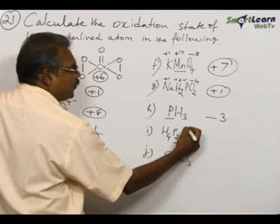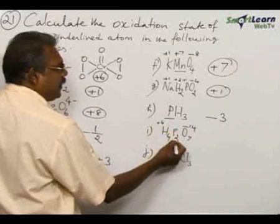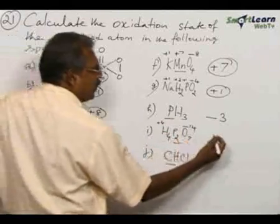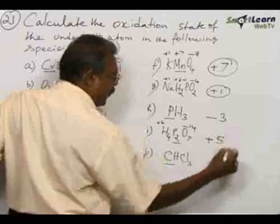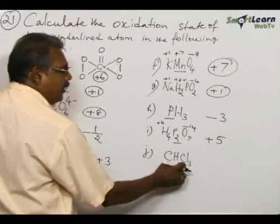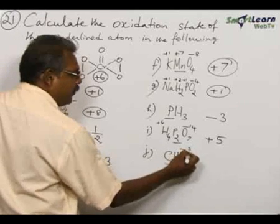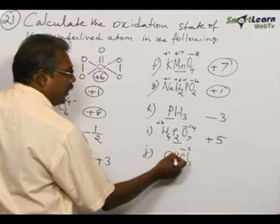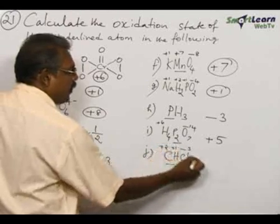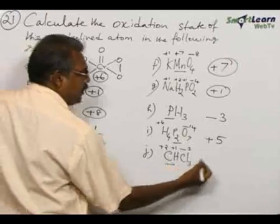And H₄P₂O₇: 7 times minus 2 gives minus 14, and plus 4 from hydrogen. Net result is plus 10, which is shared by 2 phosphorus atoms, so each phosphorus is plus 5. Last: chloroform, CHCl₃. Cl is the more electronegative element at minus 1, so minus 3 for 3 chlorine atoms and hydrogen gives plus 1. Net result plus 2, so carbon's oxidation state is plus 2.